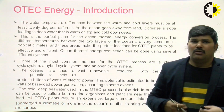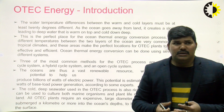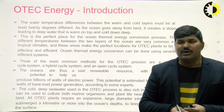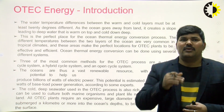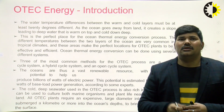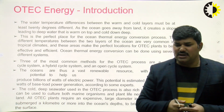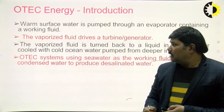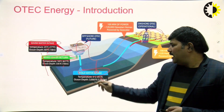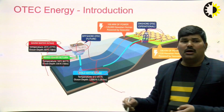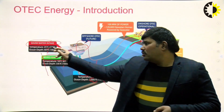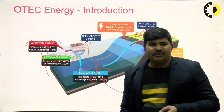In the OTEC energy system, the water temperature difference between the warm and cold layers must be at least 20 degrees. As the ocean goes away from the land it creates a slope or layer leading to deep water — warm on the top and cold at the deep. Cold water at 5 degrees centigrade is at 3000 feet depth, while hot water at 25 degrees centigrade is at only 60 feet depth.